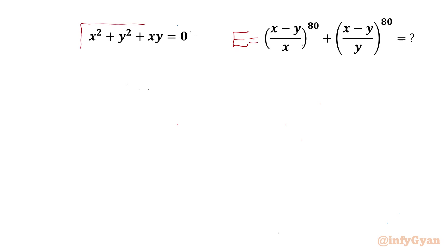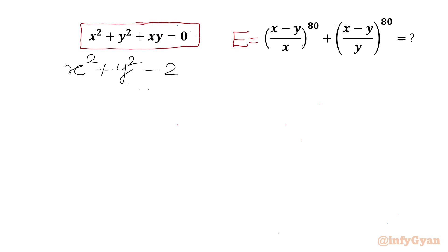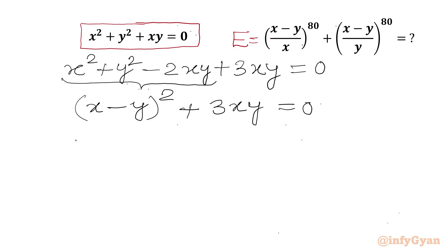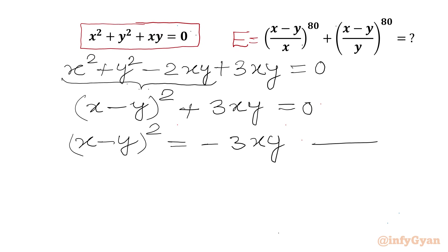The given equation is x squared plus y squared plus xy equal to 0. We start with this equation: x squared plus y squared plus xy. We rewrite it as x squared plus y squared minus 2xy plus 3xy, and since minus 2 plus 3 is plus 1, this still equals 0. From the first three terms we get (x minus y) squared plus 3xy equal to 0, or (x minus y) squared equals minus 3xy. Call this equation 1.